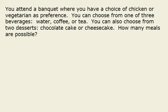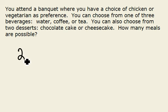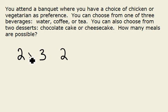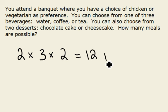So your first choice — choosing chicken or vegetarian — has two possible outcomes, so that can happen in two possible ways. The next choice of choosing a beverage can happen in three possible ways, and your last choice of choosing a dessert has two possibilities. So we multiply these all together and get a total of twelve possible meals.